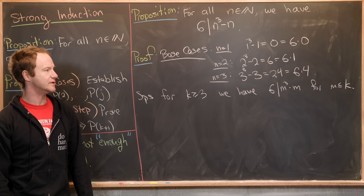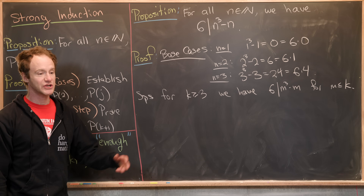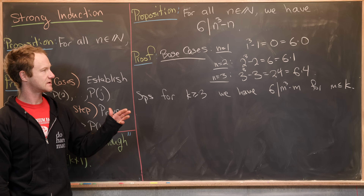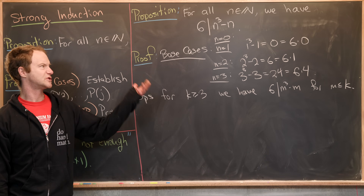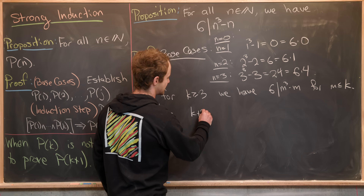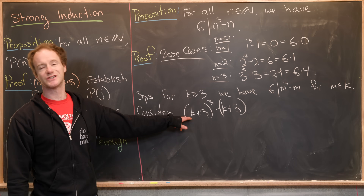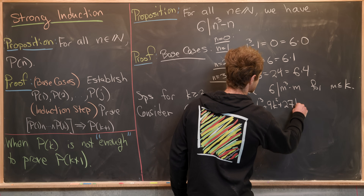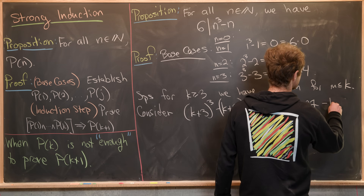Now let's see what we need to do. The k+1 and k+2 cases are harder to work with directly, so we'll look at the k+3 case. Consider (k+3)³ - (k+3). Expanding by binomial coefficients gives k³ + 9k² + 27k + 27 - k - 3.